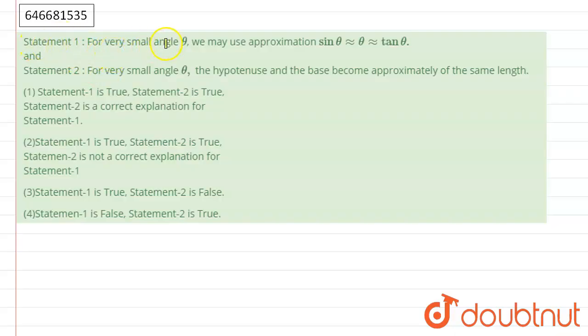is for a small angle theta, we can use approximation: sine theta is approximately equal to theta is approximately equal to tan theta. And statement two is for a small value theta, the hypotenuse and the base become approximately of same length.